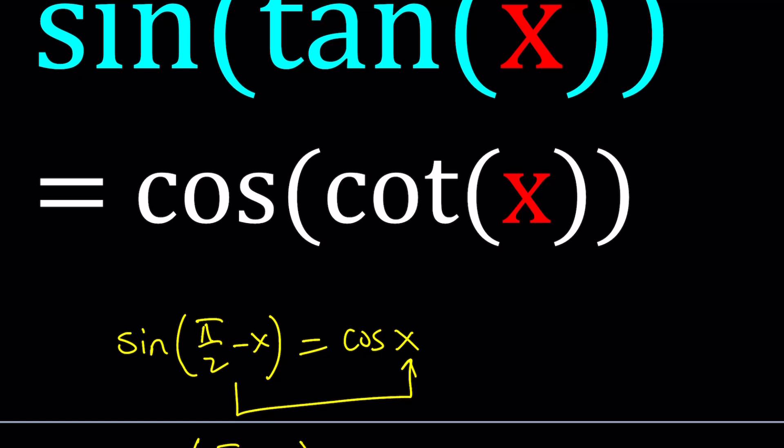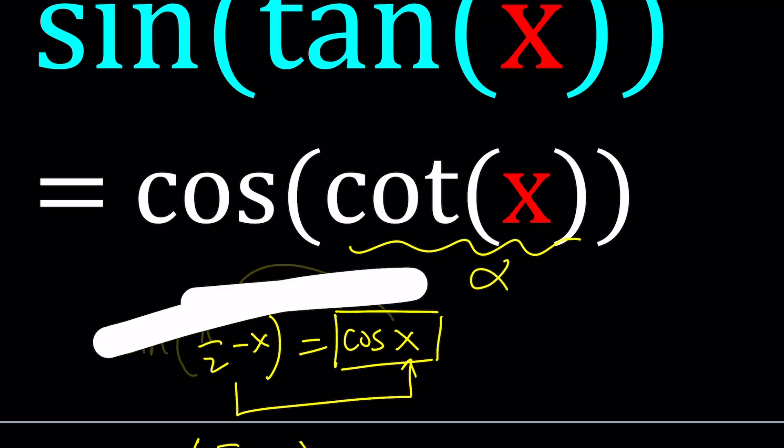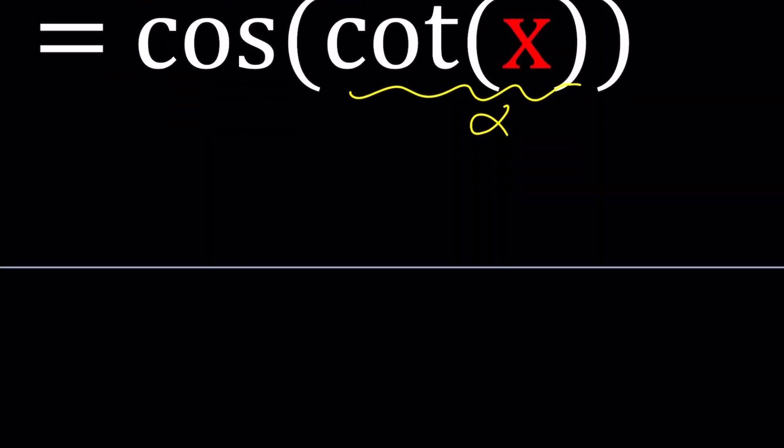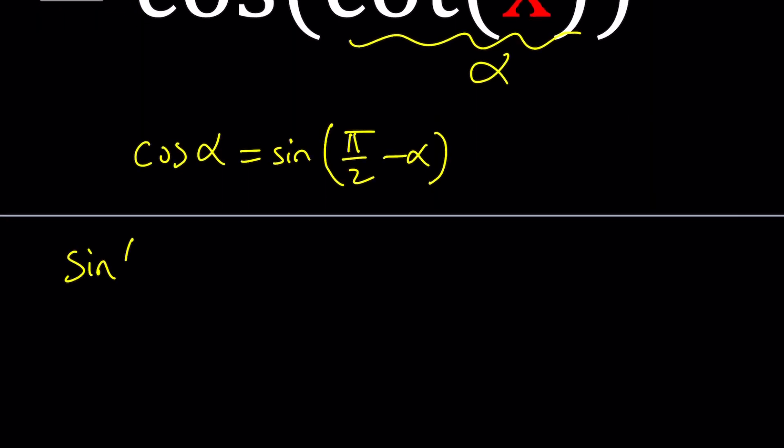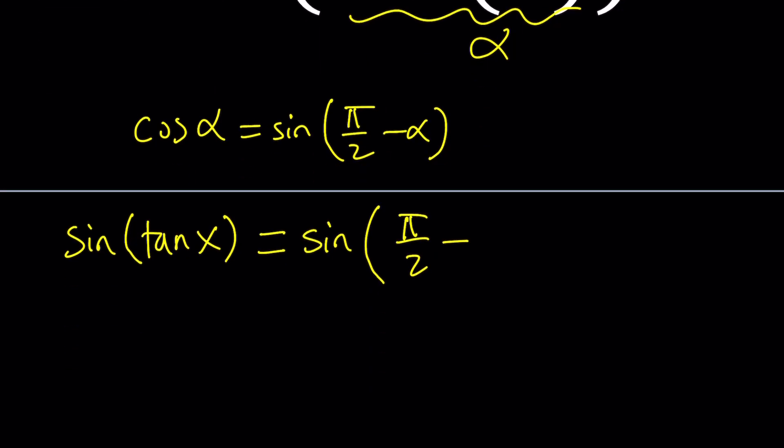So that's one of the relationships we can use. Another one is cosine pi over 2 minus x will give you the same thing as sine x. Same thing, you're just switching them around. So which one should we use? No big deal, we can just use one of these. Let's use the first one and turn cosine into sine by using this identity. So suppose this is alpha. I'm going to go ahead and replace that with sine of pi over 2 minus alpha.